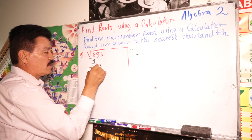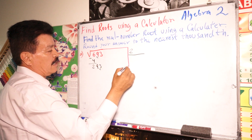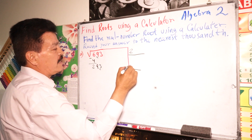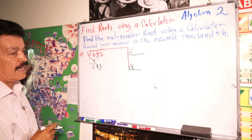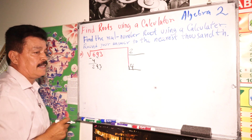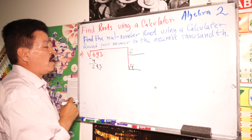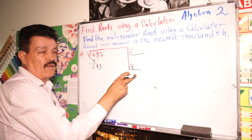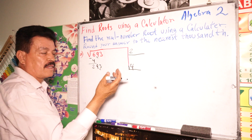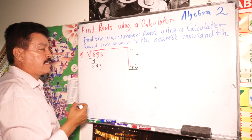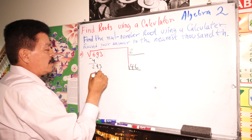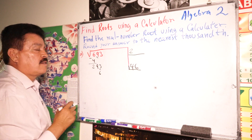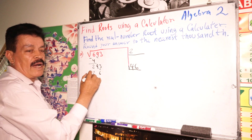Now, bring down the next pair of numbers. Divide as a partial step — write the double of the current root answer. So write the double. Divide: 29 divided by 4. It's maybe 6. Let's write 6. Six times 6 is 36. Six times 4 is 24, plus 3 is 27. Subtract here. It's going to be 7, then 1, then 0 — remainder 16.